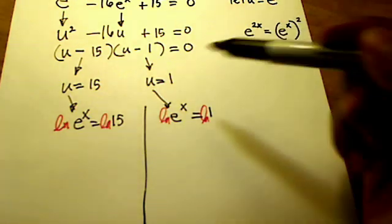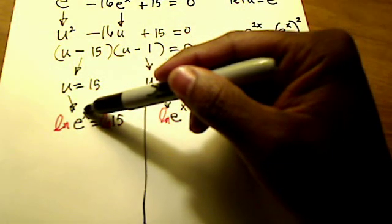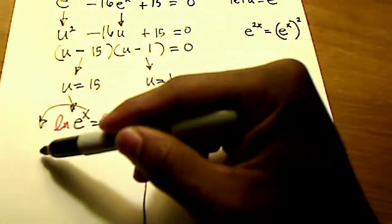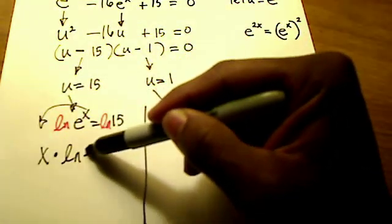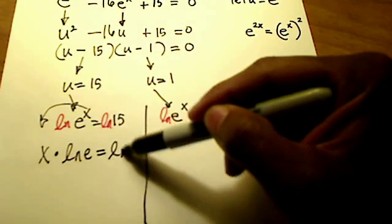Let's see. The trick also that we learned because of the power rule is I can take this x and kick it out front. So I now have x times the natural log of e is equal to the natural log of 15.